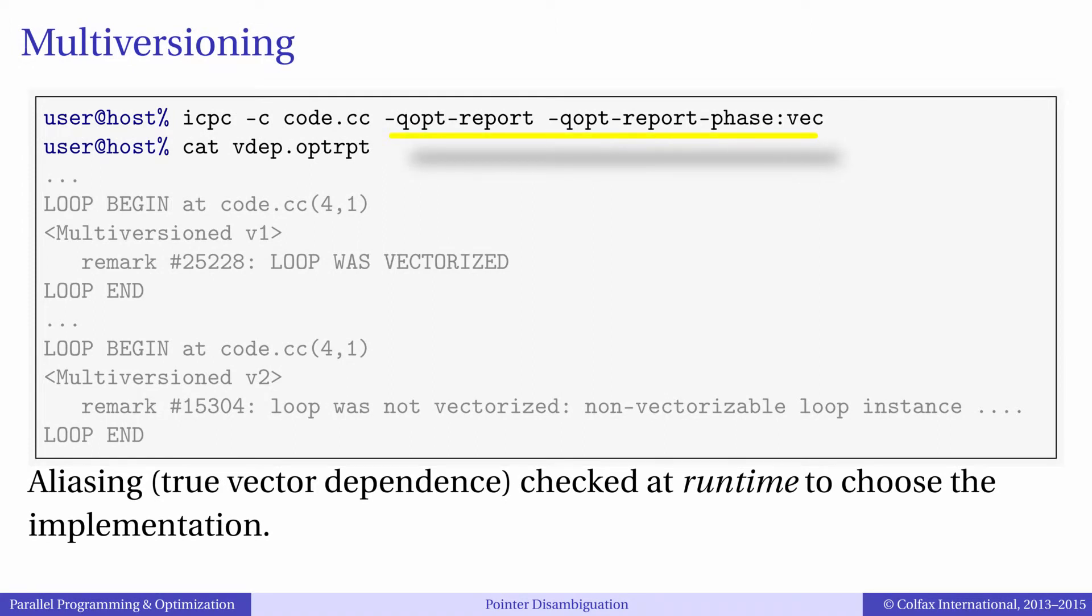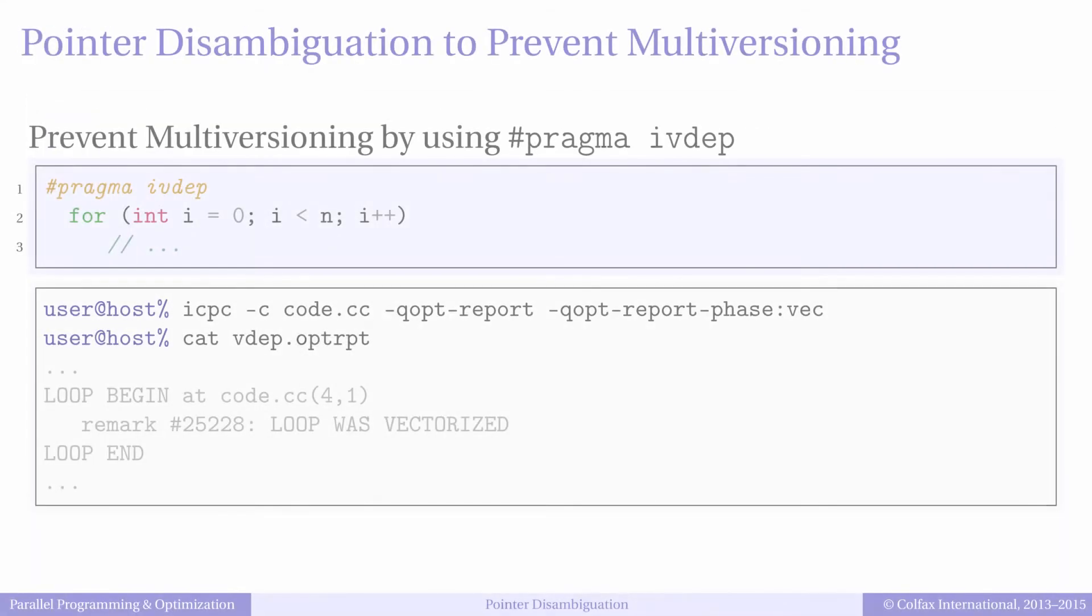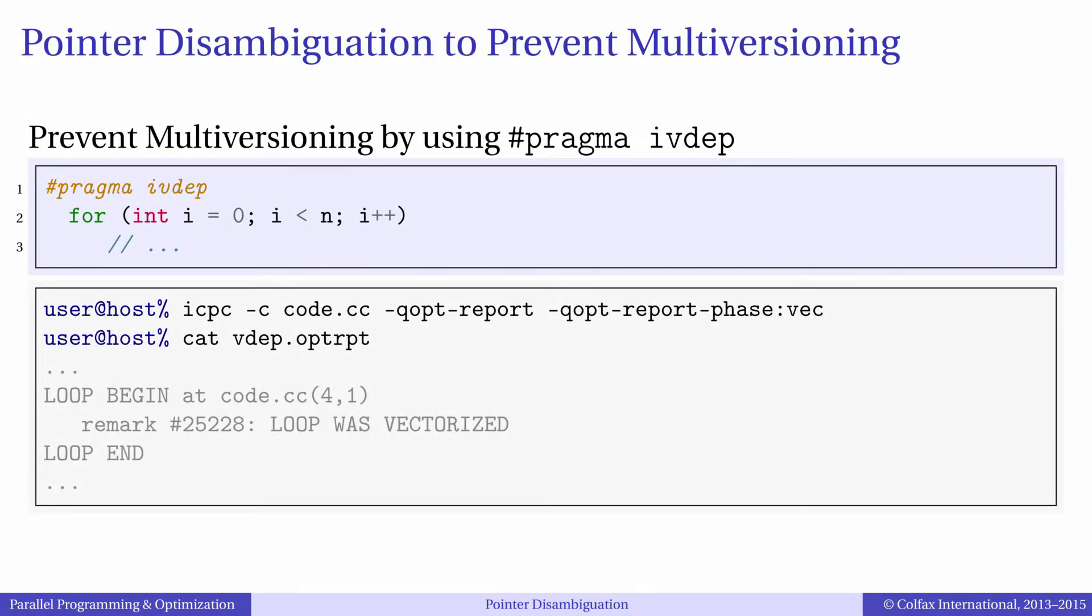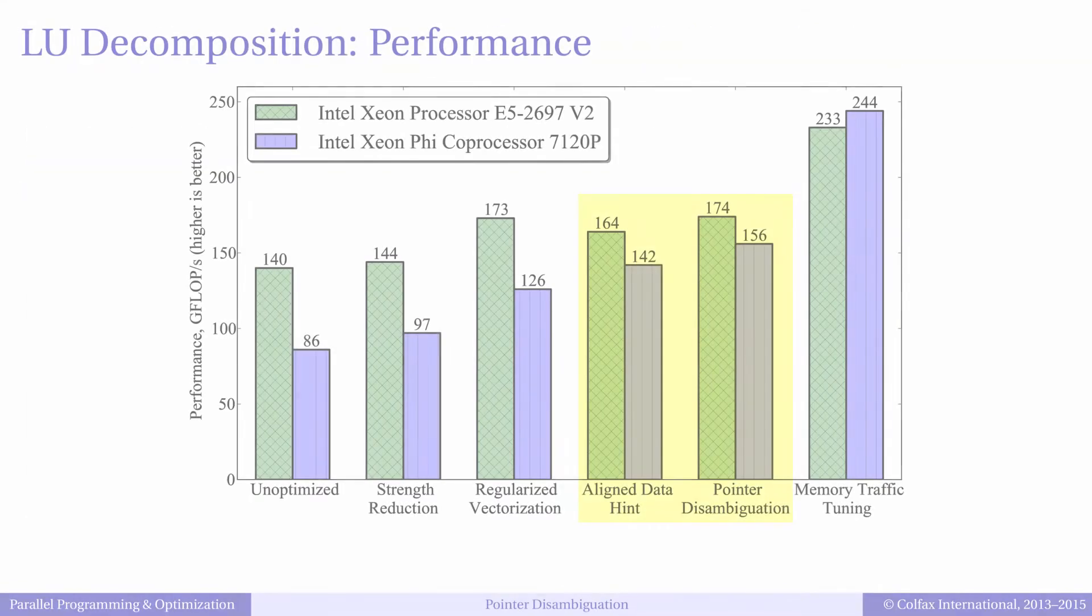You can actually diagnose the need for such a pragma using the optimization report. When you compile the code, you may find the optimization report lines that say multiversioned v1 and multiversioned v2. This means that the compiler was not sure about pointer aliasing and implemented two versions of the code, one vectorized and the other scalar. When we use pragma ivdep, in the optimization report multiversioning disappears. So there will be less code and one fewer check at the beginning of the loop, and as a result performance will improve.